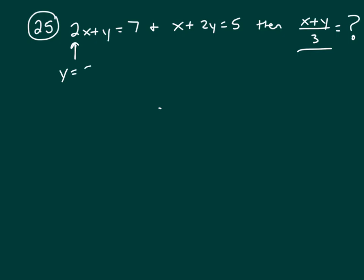So I need to subtract 2x from both sides. And now let's take this expression for y and substitute it in right there. So that's x plus 2 times y, which is 7 minus 2x, equals 5.